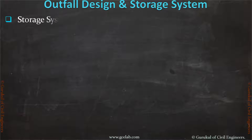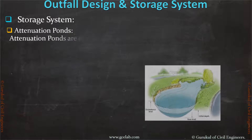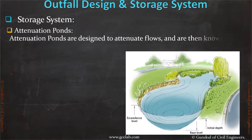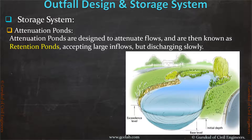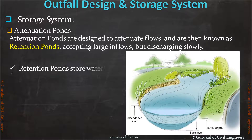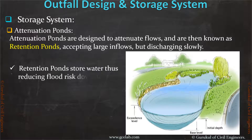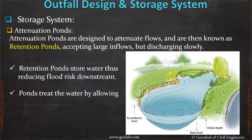We will discuss water storage systems. The first system is the attenuation pond. Attenuation ponds are designed to attenuate flows and are also known as retention ponds, accepting large inflows but discharging slowly. Retention ponds store water, thus reducing flood risk downstream. Ponds treat the water by allowing suspended solids to settle out.